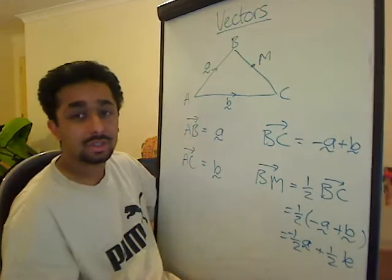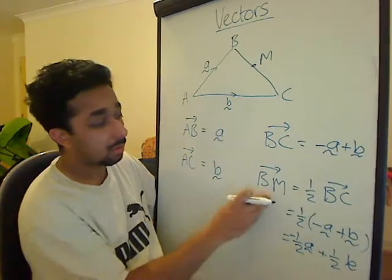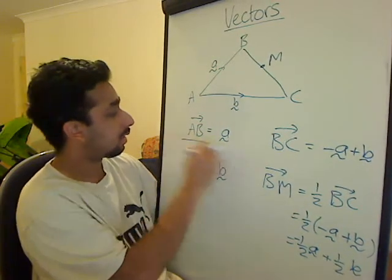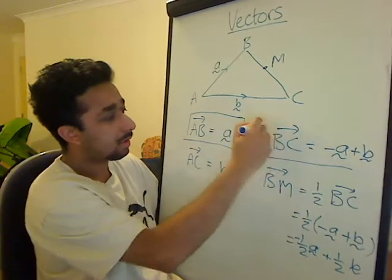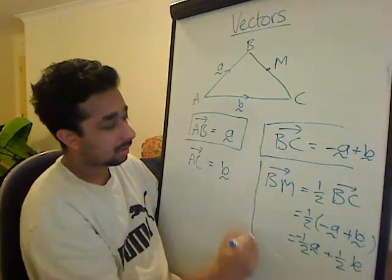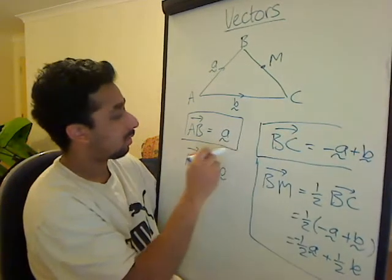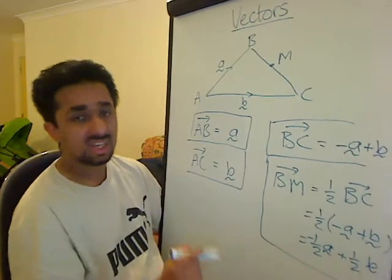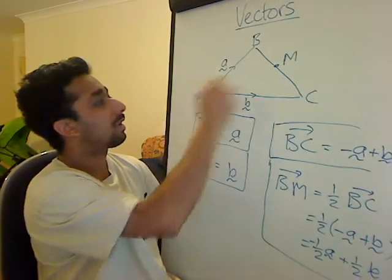This is better if you're trying to combine your one vector with another, like we're going to do right now. So we've got one thing here, one bit here, one bit here, one bit here. Now the last bit we're going to work out is, how do we get from A to M?